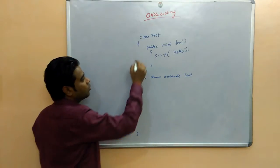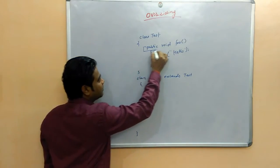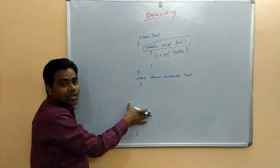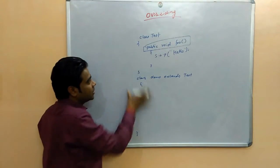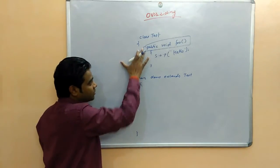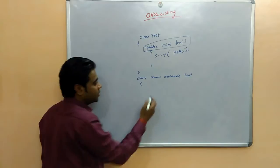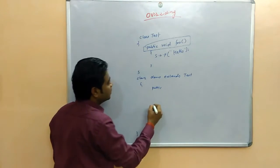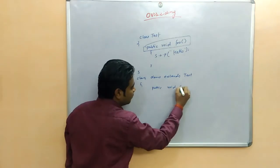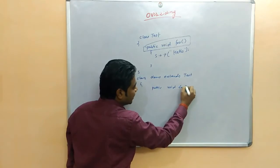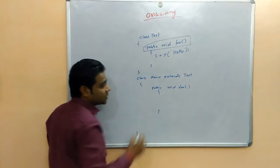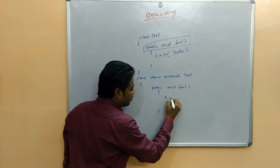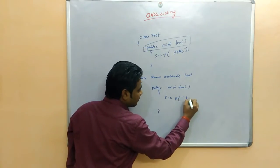Overriding means that when we have a method in the base class, it will have exactly the same signature in the child class. Method overriding means we are using public void foo — the method signature must be the same. Then system.out.println prints welcome.